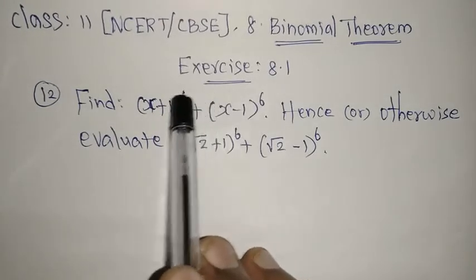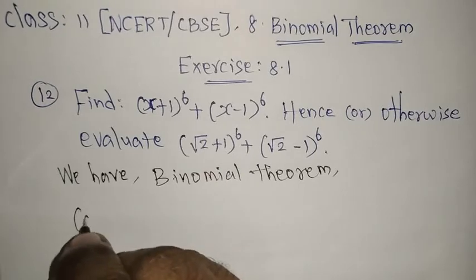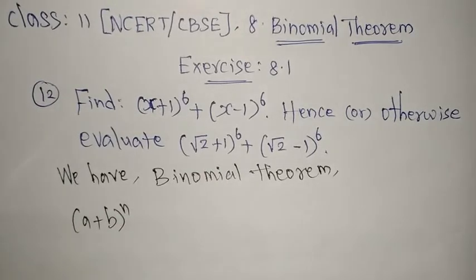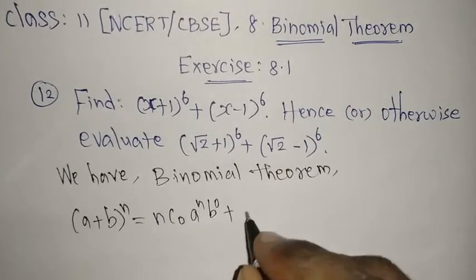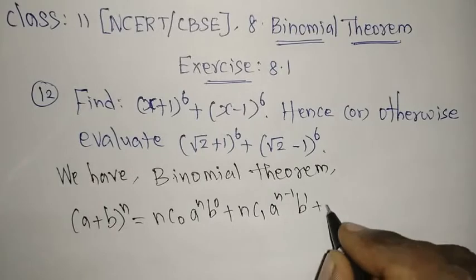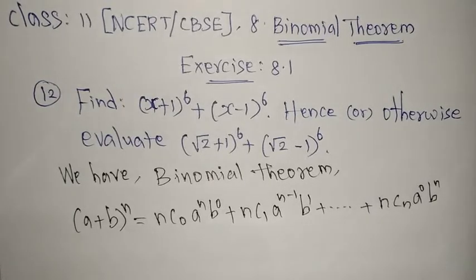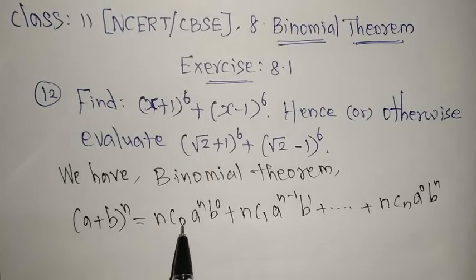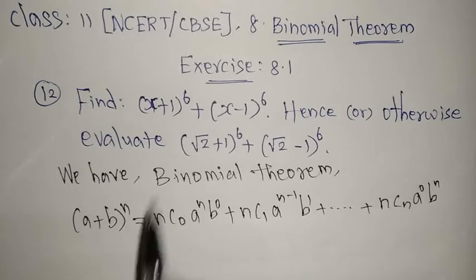Since the power is more than 3 or 4, we are going to use the Binomial Theorem. The Binomial Theorem formula is: (a + b)ⁿ = nC0 · aⁿb⁰ + nC1 · aⁿ⁻¹b¹ + ... + nCn · a⁰bⁿ. The power of a decreases from n to 0, and the power of b increases from 0 to n.